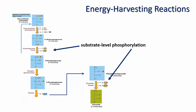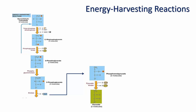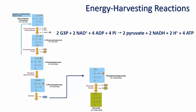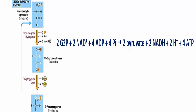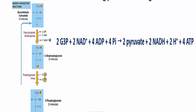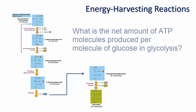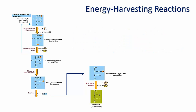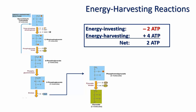Can you write the overall net reaction of the energy-harvesting stage of glycolysis? Pause the video and try to write it down. The net reaction is: 2 G3P + 2 NAD+ + 4 ADP + 4 inorganic phosphate give 2 pyruvate + 2 NADH + 2 H+ + 4 ATP. The net amount of ATP molecules produced is 2 molecules per glucose: 2 ATP were used in the energy-investing stage and 4 were produced in the energy-harvesting stage, making 2 net ATP molecules.